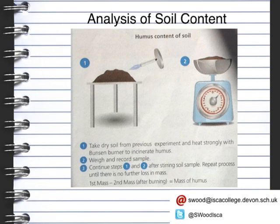To find the humus content, take the completely dried soil sample from the previous experiment and heat it with a Bunsen burner. This will incinerate the humus. Weigh the sample and continue heating until there is no further loss in mass. Your initial mass minus the mass after the burning gives you your mass of humus.